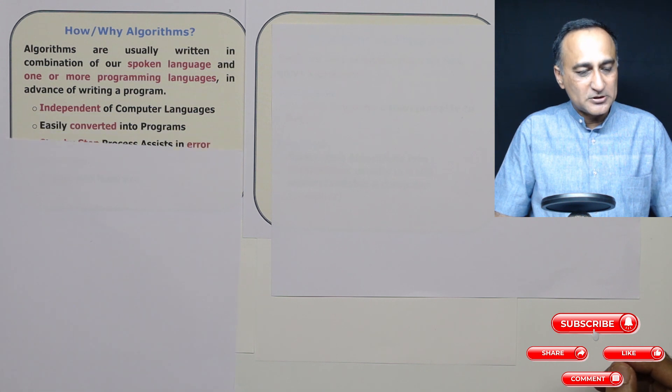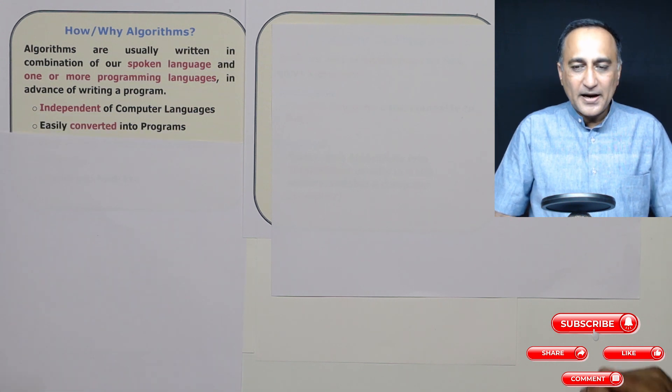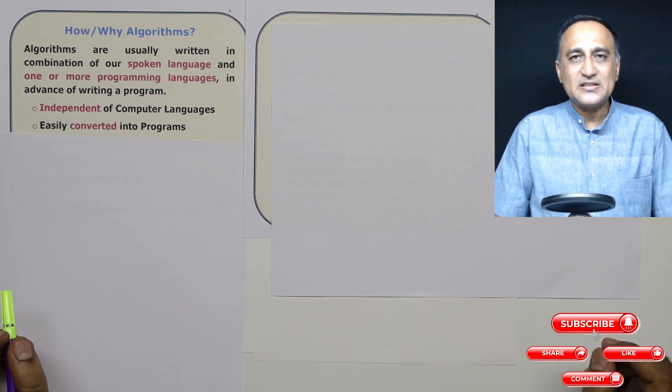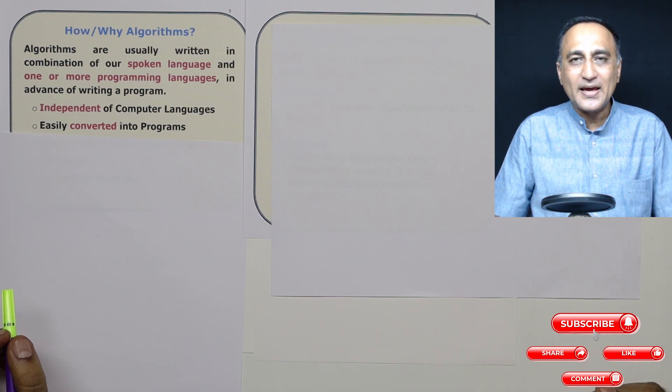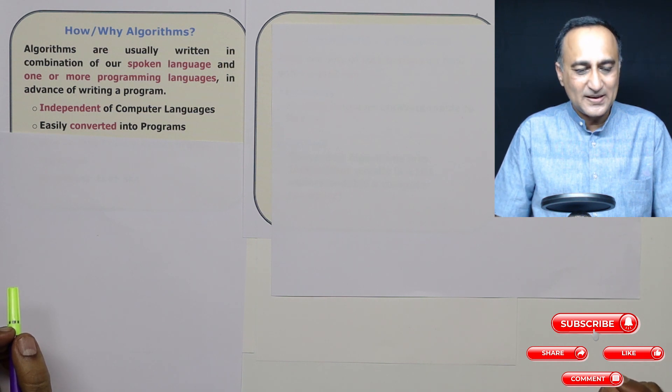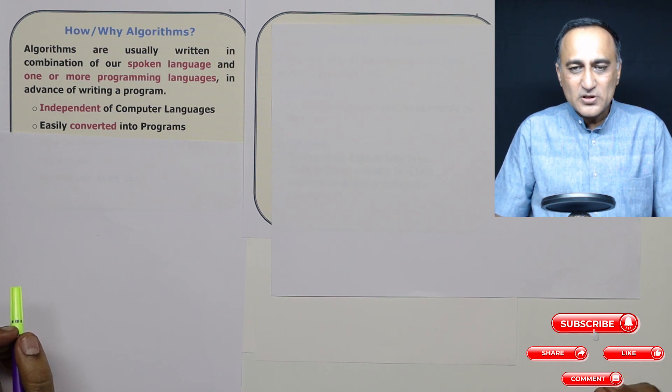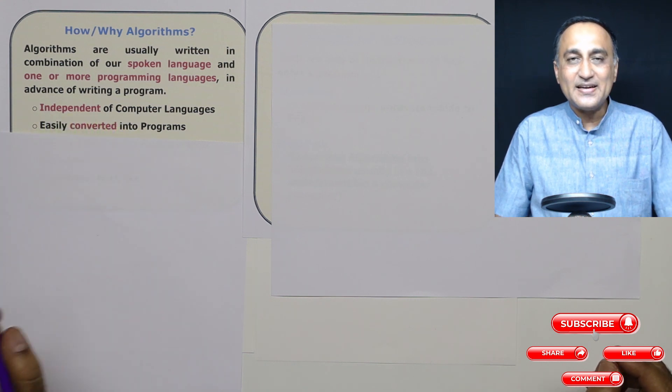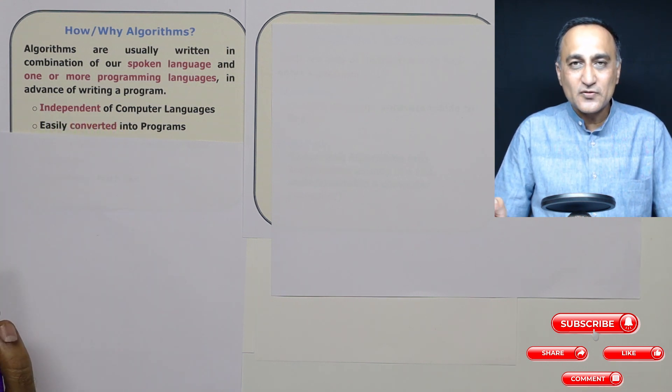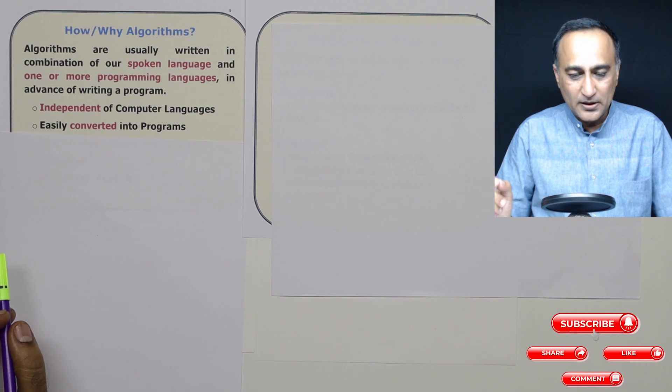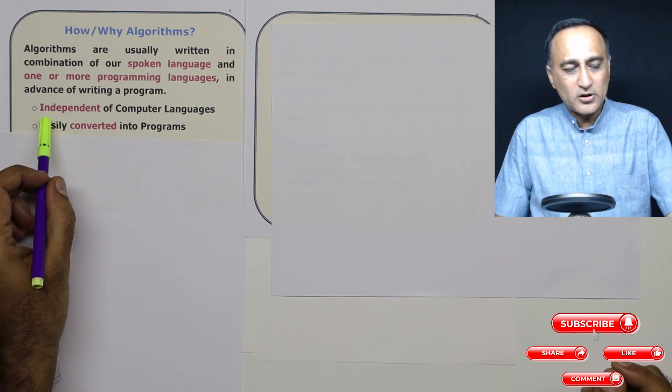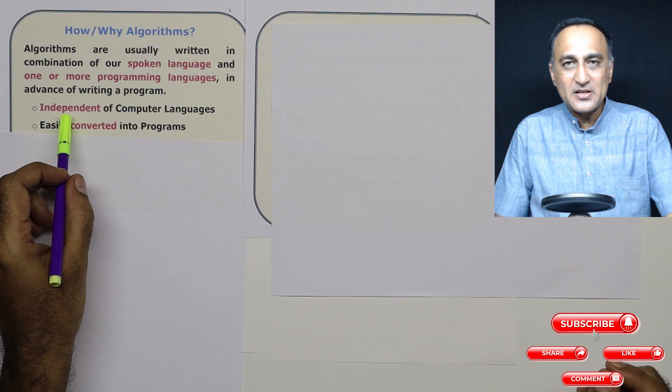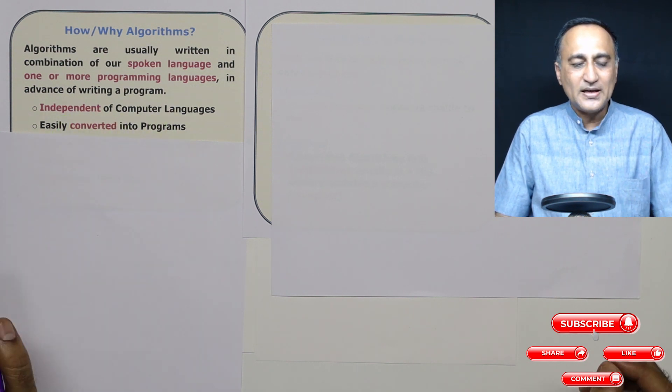Why do we write algorithms? The advantage of algorithms is algorithms should not look like any computer language. It should not look like C++, Java, or C. The advantage of using an algorithmic approach is somebody who does not even understand programming is able to understand what is the process of solving that problem or what is the logic of that particular problem. So algorithms are always an attempt is made at least to keep them independent of computer languages.